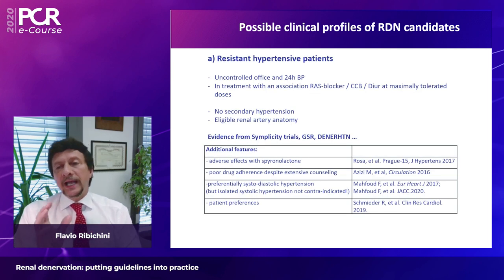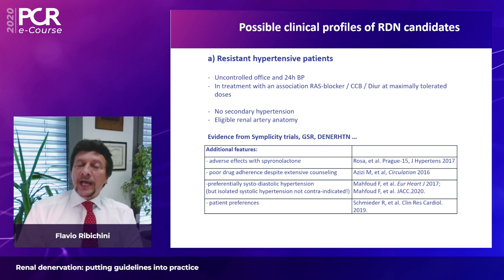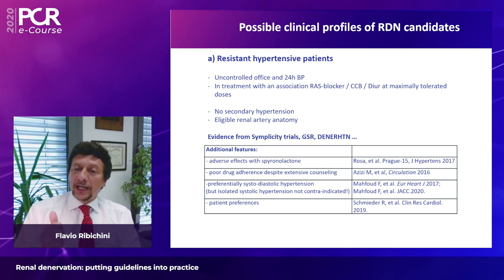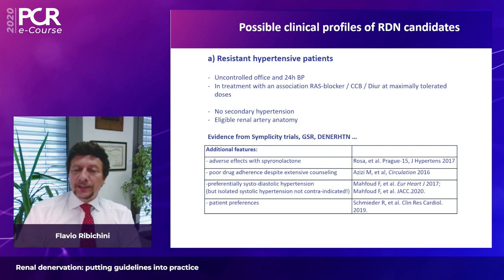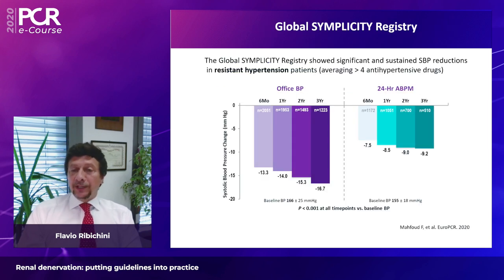Possible candidates for renal denervation include those with uncontrolled office and ambulatory blood pressure, those on renin-angiotensin blockers, calcium channel blockers, and diuretics but not reaching target, after exclusion of secondary causes and confirmed eligibility for the technique. Scientific evidence also supports inclusion of those with adverse effects to spironolactone, poor drug adherence despite extensive counseling, and patients preferring interventional therapy.